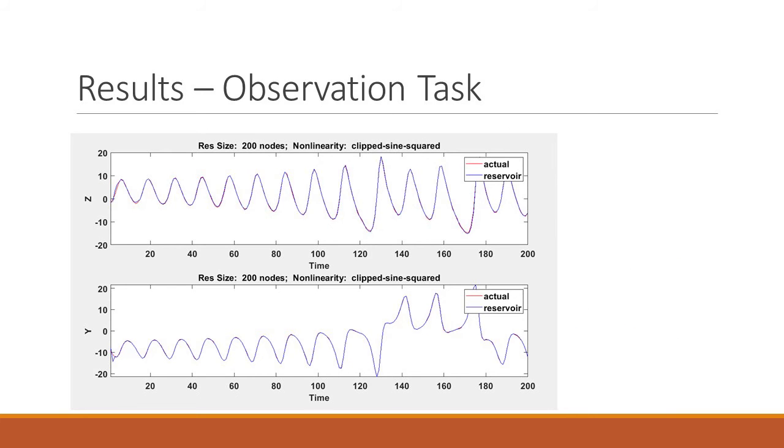So finally our results. For the observation task we were very successful. As you can see the actual and the reservoir graphs are pretty much on top of each other. That means that we are getting out z, a prediction of z at the same time step that is pretty much exactly what it actually is. Which when you think about it is really cool because the reservoir doesn't understand any of the chaotic dynamics at all.